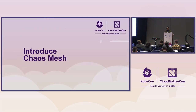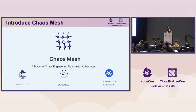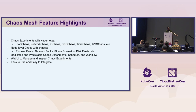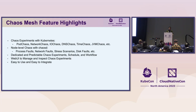Coming to Chaos Mesh — it is an open source chaos engineering platform that provides a comprehensive and user-friendly toolchain to run chaos experiments on Kubernetes, and even beyond. It offers several kinds of chaos experiments including pod chaos, network chaos, IO chaos, DNS, time, and JVM chaos. You can also extend these capabilities via Chaos Daemon to do node-level experiments like stress, disk failures, and network failures.